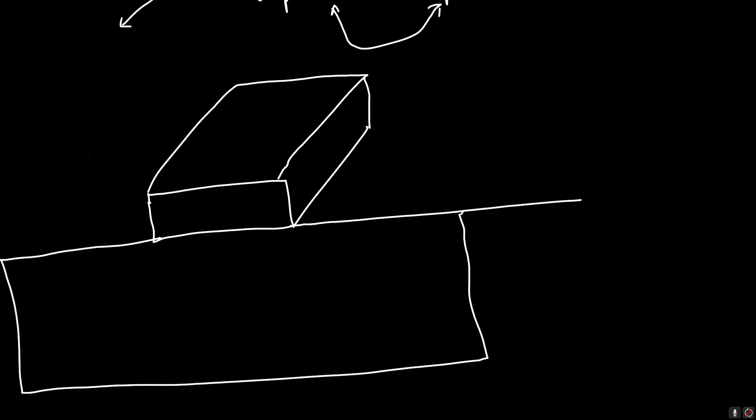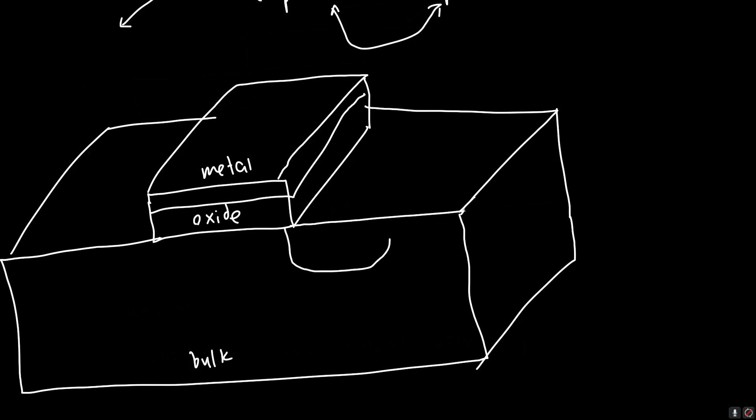And let's answer them just by first drawing out the simple structure of a three terminal MOSFET. We've got our metal up here. We've got our oxide here. We've got our bulk or body or substrate, whatever you want to call it. And we've got our source and our drain. So this is our drain. This is our source.